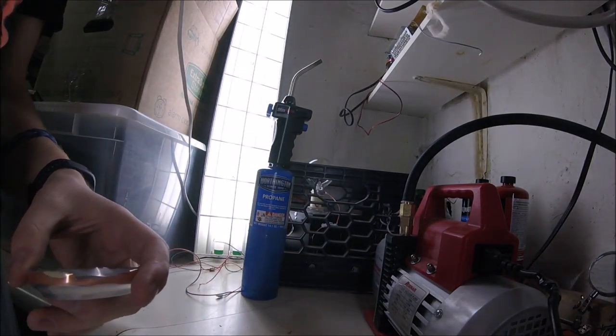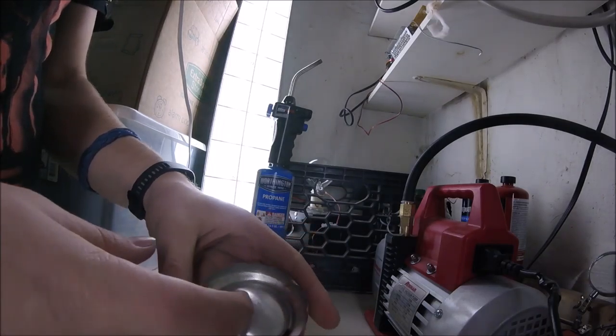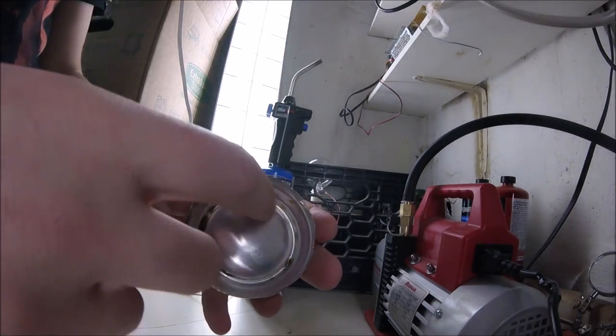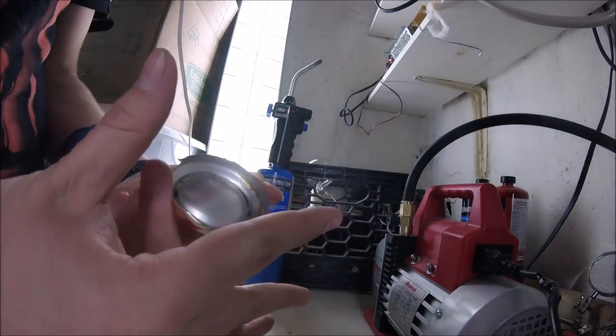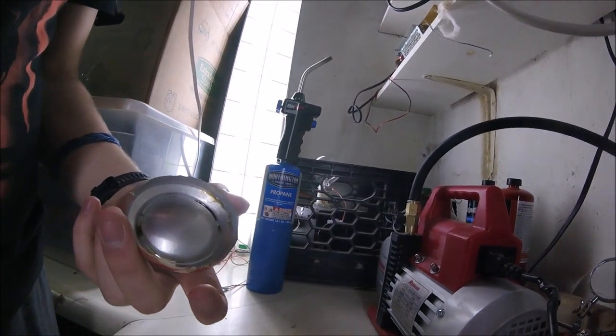So now for the anode, I'm going to be using this dome from the bottom of a Coke can. So I'm going to cut that out.